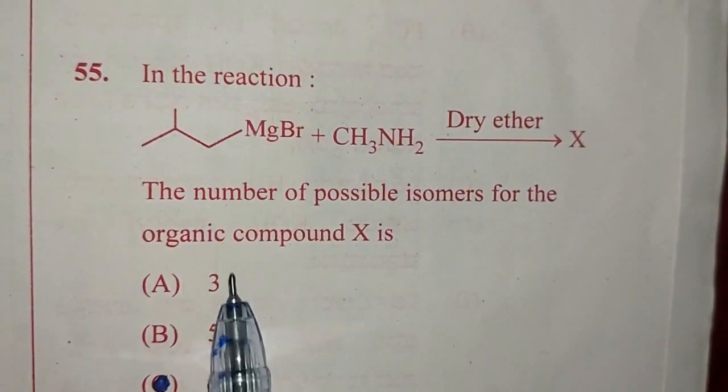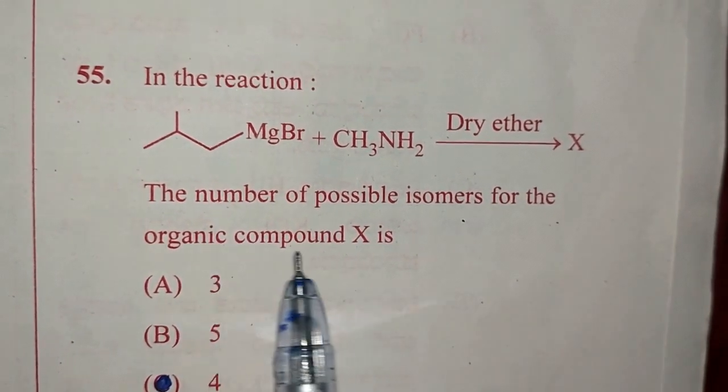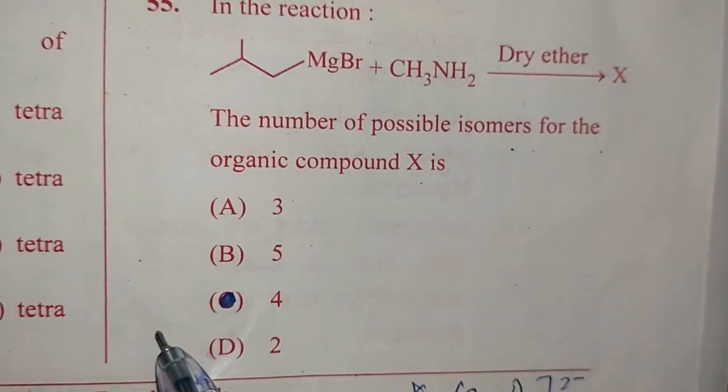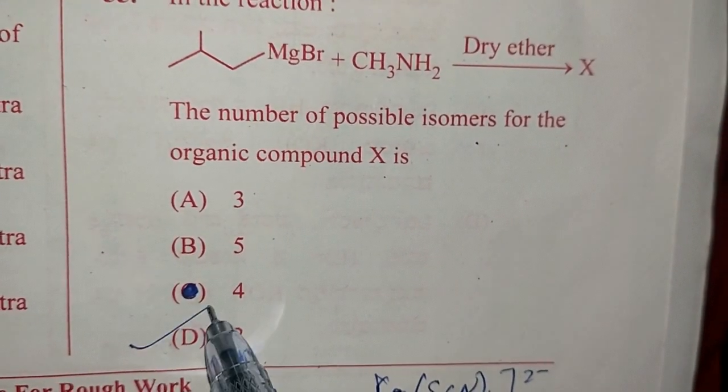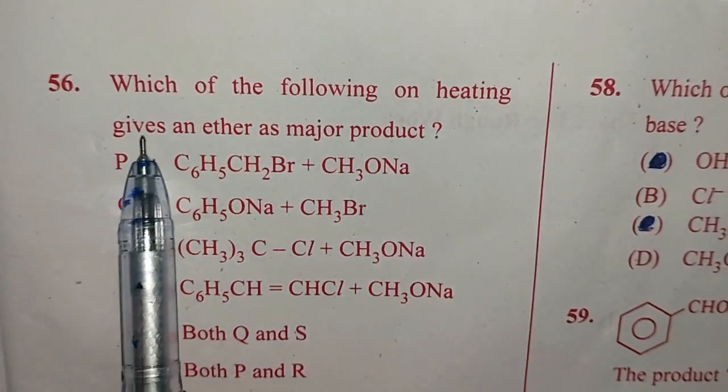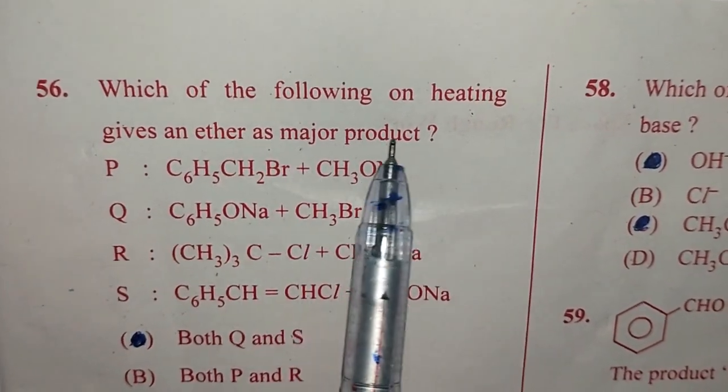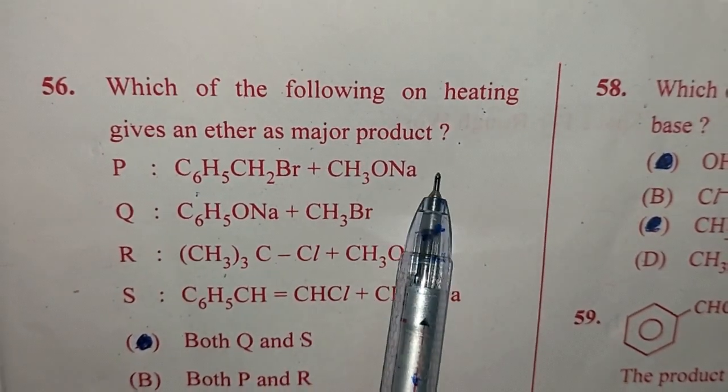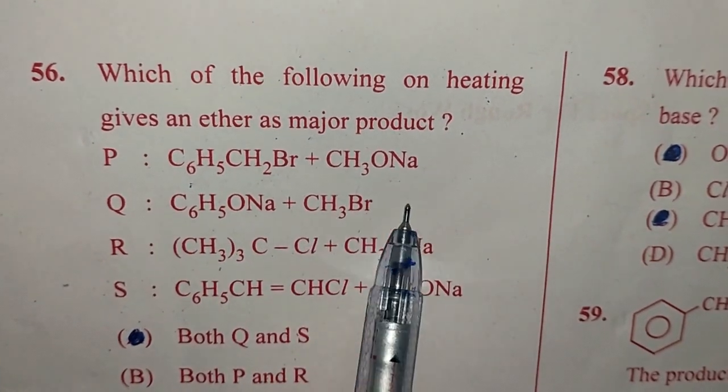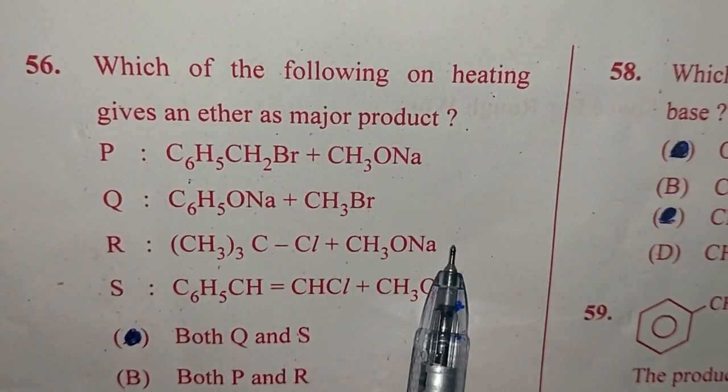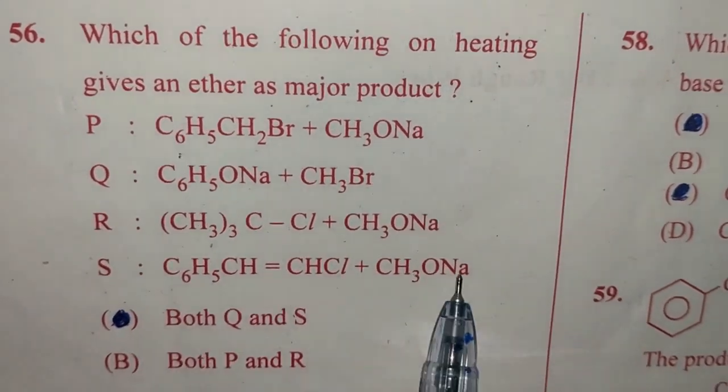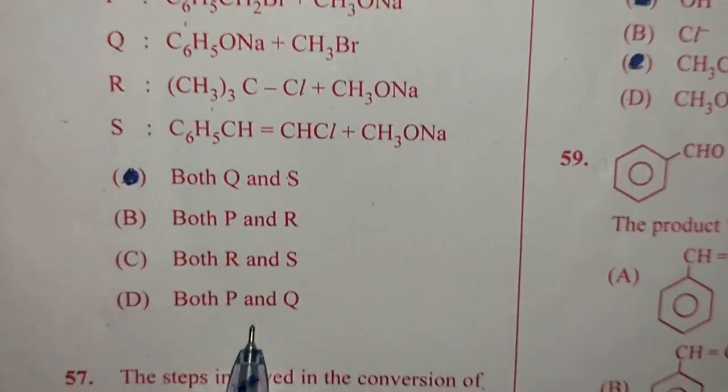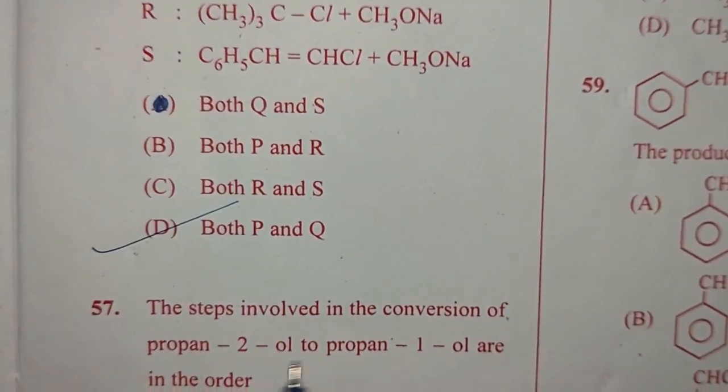Question number 55. In the reaction, so they have given a reaction. The number of possible isomers for the organic compound X is, and the answer for this question is option D, 2. Question number 56. Which of the following on heating gives an ether as a major product? So we can see here P: C6H5-CH2Br plus CH3ONa gives ether. Q: C6H5ONa plus CH3Br gives ether. R do not give ether as well as S do not give ether. So it should be both P and Q. And the option is D, both P and Q.